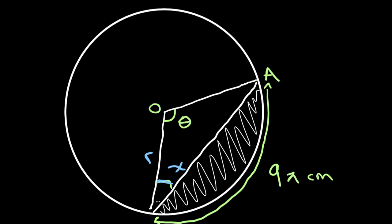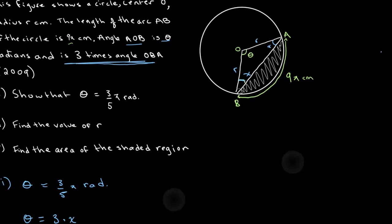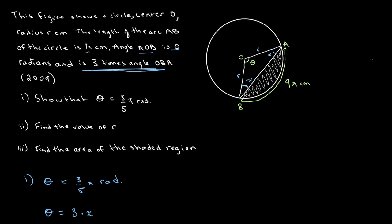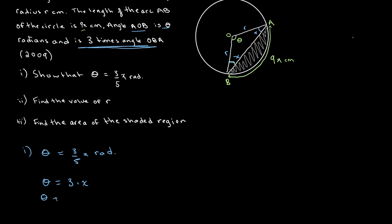Since both sides of the triangle have length r, we have an isosceles triangle. This tells us that the base angle on the other side of the triangle is also equal to X. We know that all the angles of a triangle add up to 180 degrees, or pi radians. So theta plus X plus X is equal to pi radians, which we can rewrite as theta plus 2x equals pi.